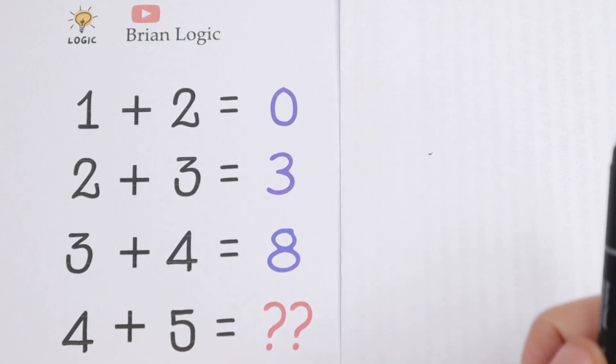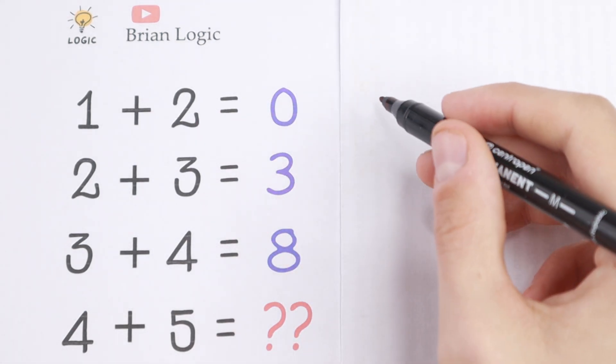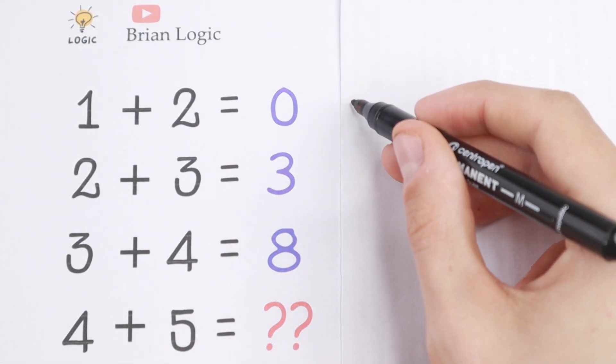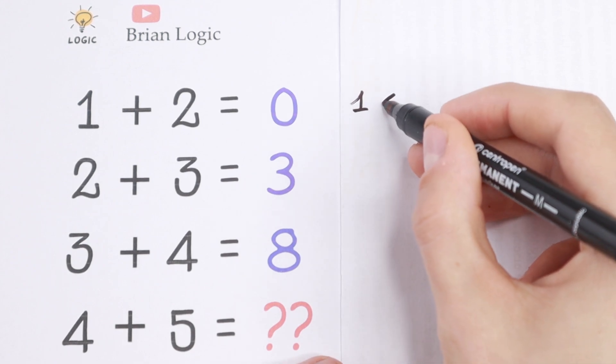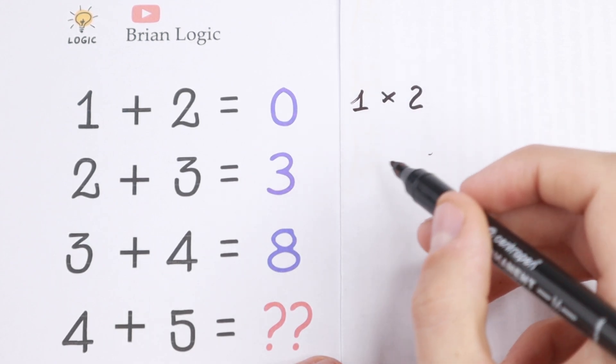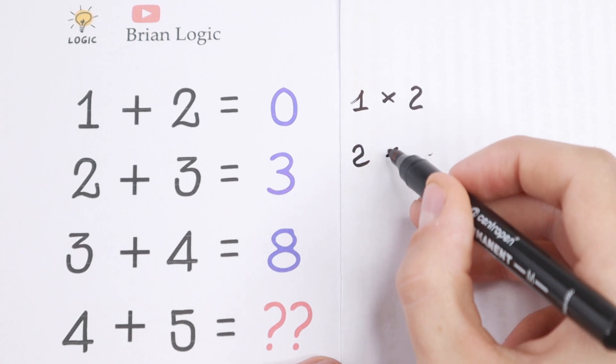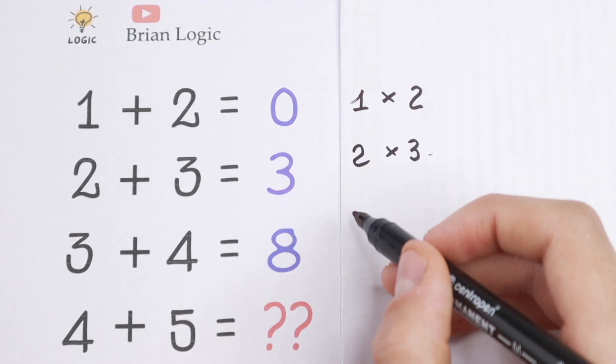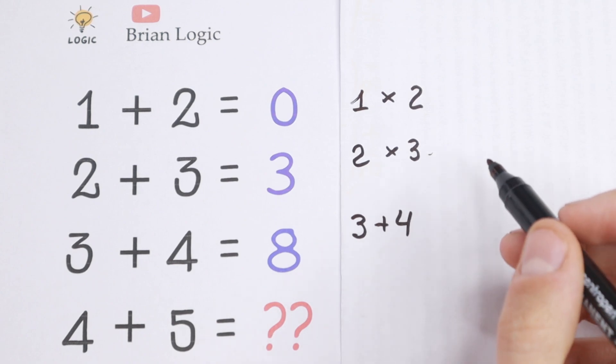I suggest firstly I change this plus sign by multiplying sign. So I write this as 1 times 2 and 2 times 3. So firstly I multiply these two numbers, 3 plus 4.